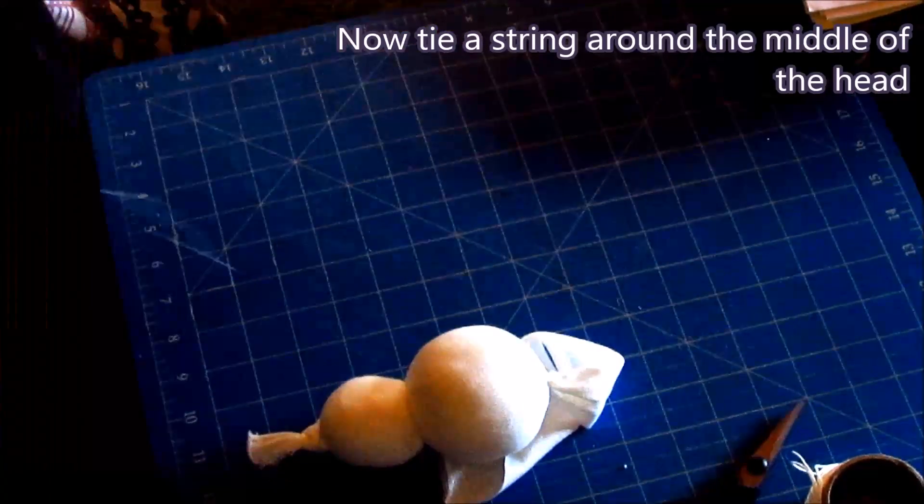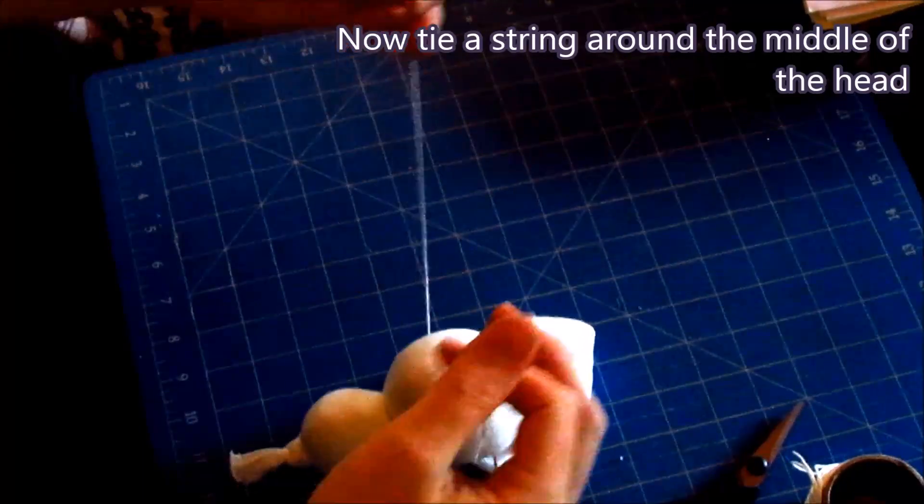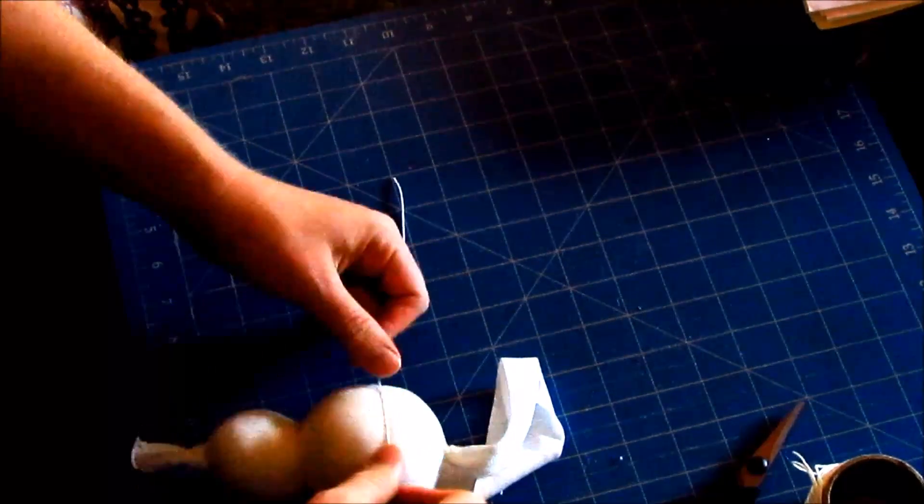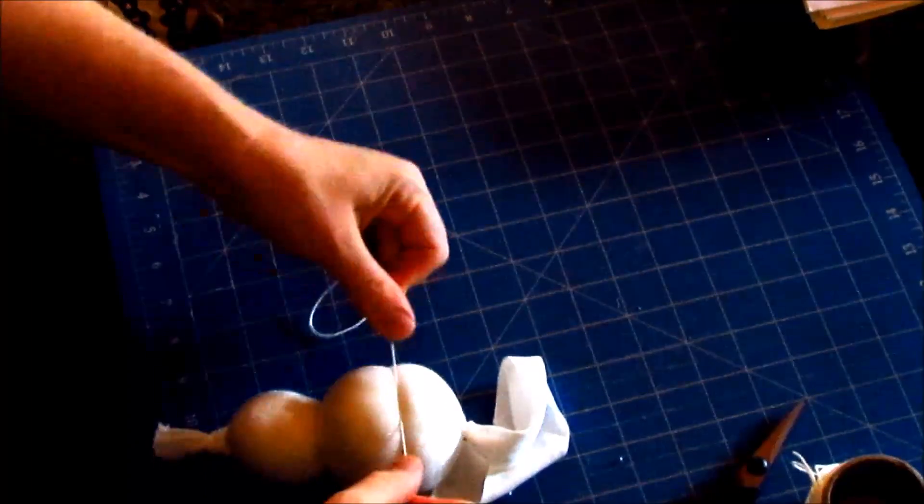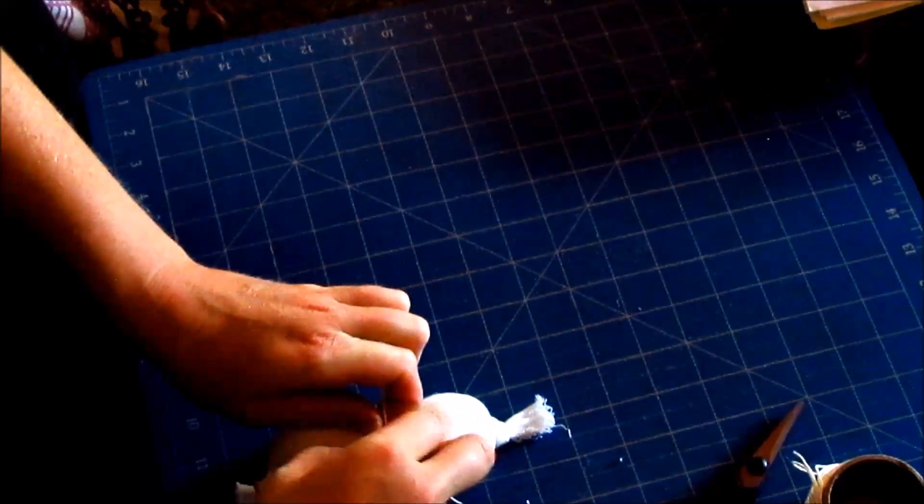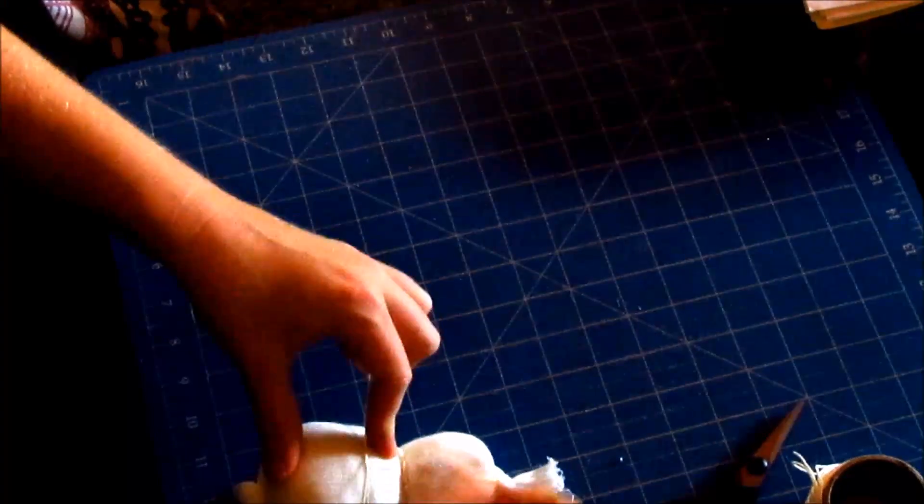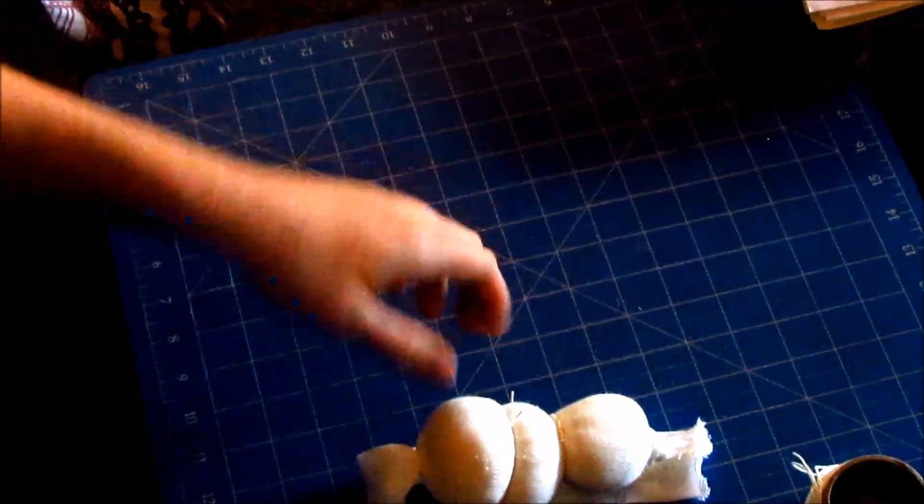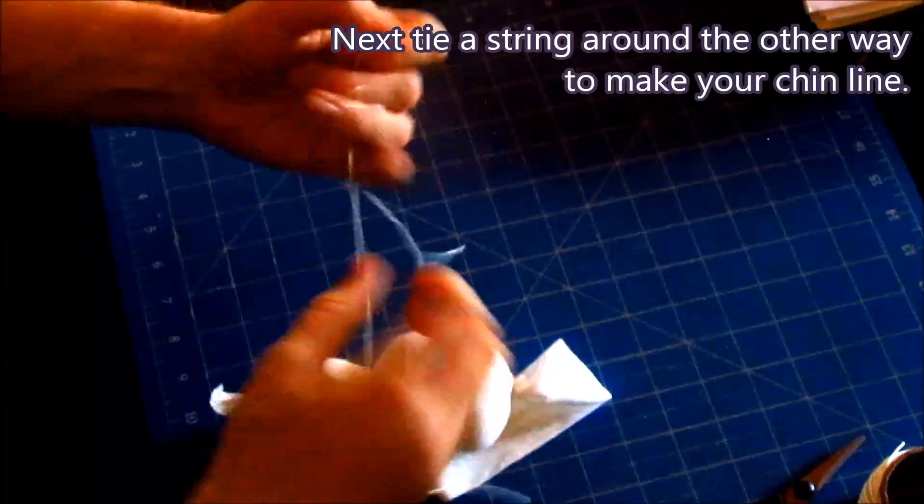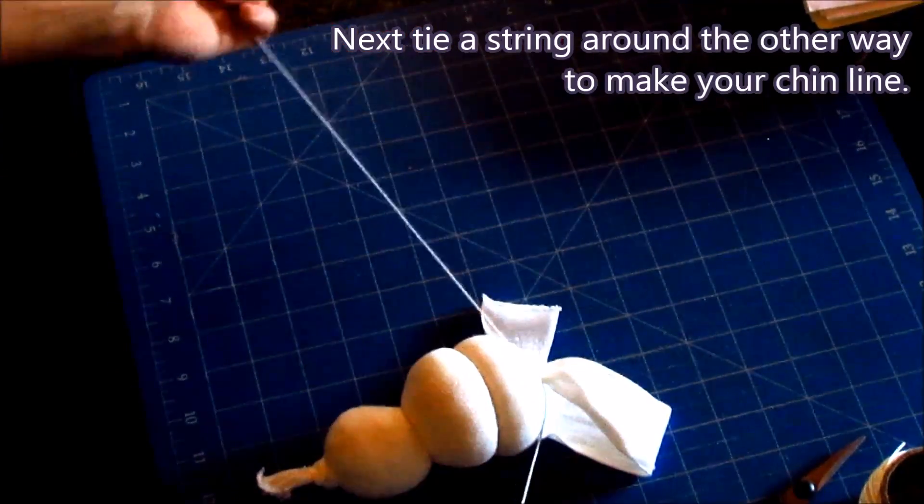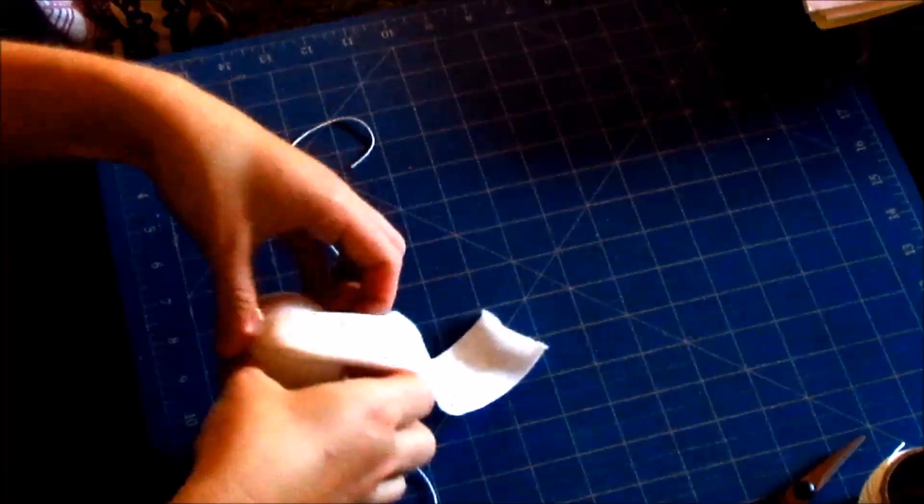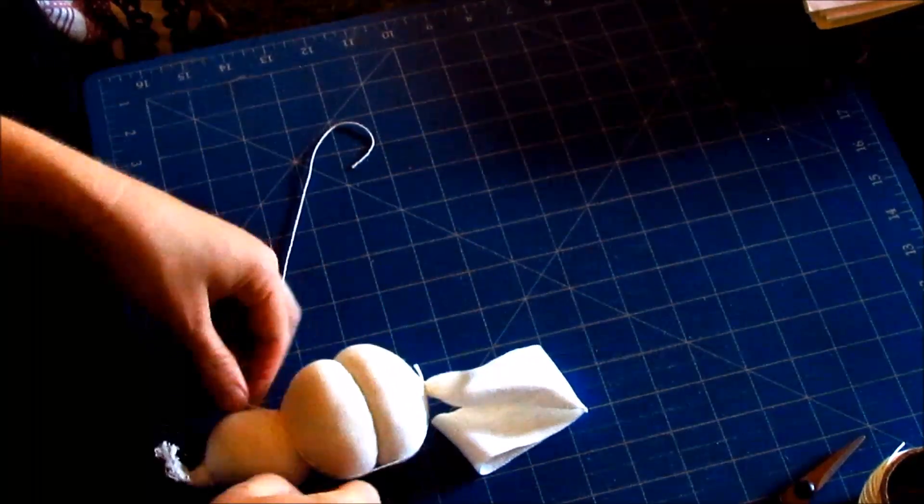Now tie a string around the middle of the head. This will be the eye line. Next tie a string around the other way to make your chin line. Pull that string nice and tight to make those chubby cheeks.